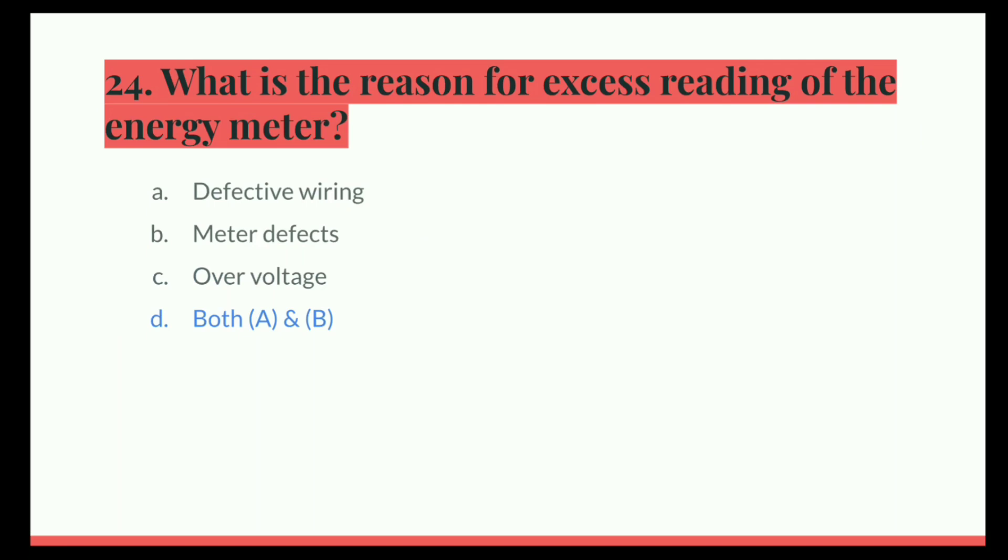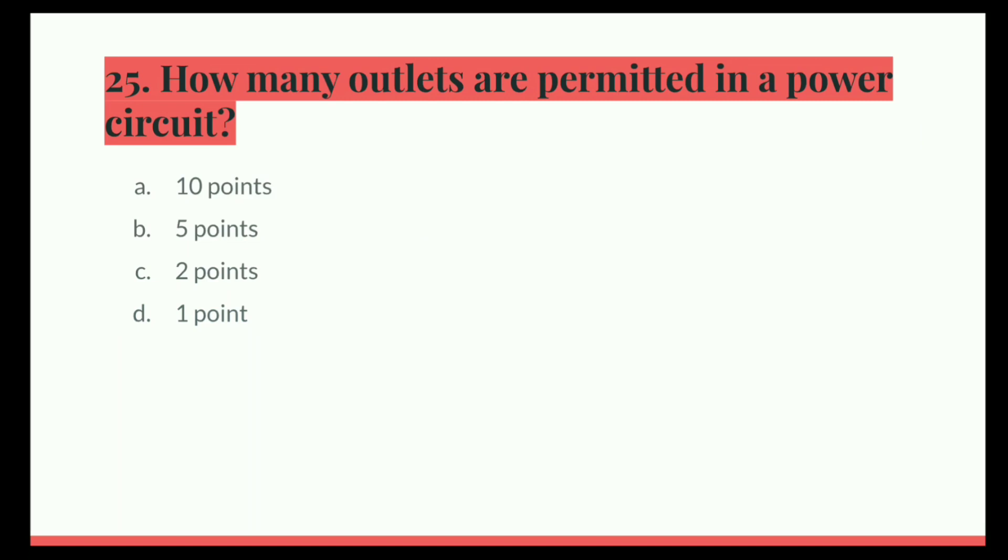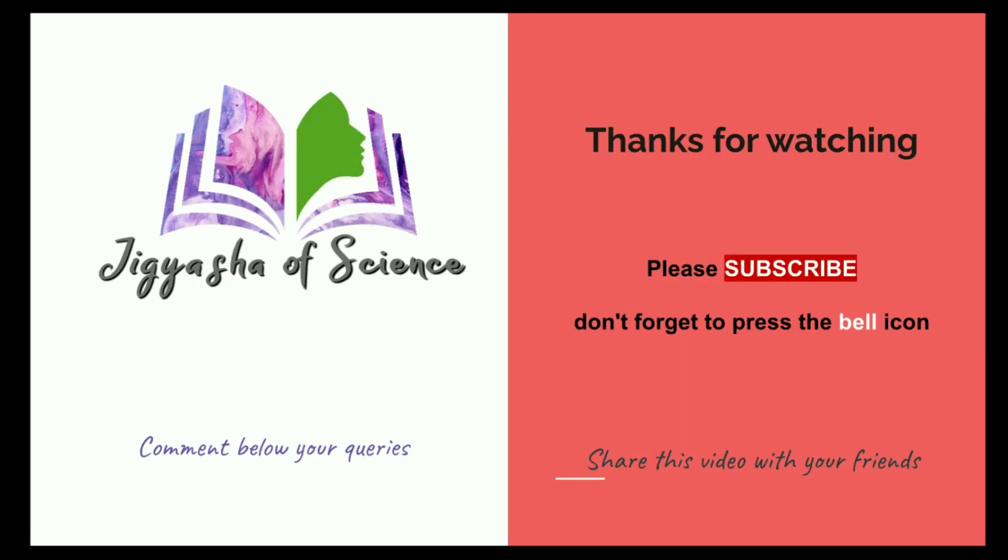Next question. How many outlets are permitted in a power circuit? Option A, 10 points. B, 5 points. C, 2 points. D, 1 point. The correct answer is 2 points. Thanks for watching, please subscribe and share the video with your friends. If you have any queries, please let me know in the comment section. See you till the next time.